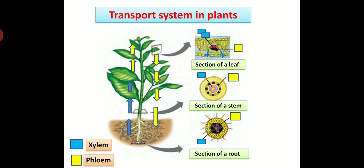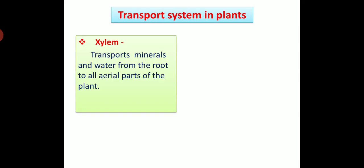Next point, transport system in plants. Students, there are two types of transport systems in plants, which are indicated by two colors: blue color and yellow color. The blue color indicates xylem and yellow color indicates phloem. Now we are going to see about xylem and phloem.